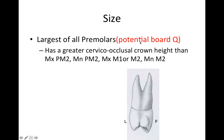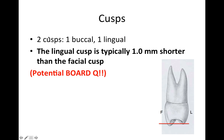In terms of size, the maxillary first premolar is the largest of all the premolars. One way you might see this asked is which tooth has a greater cervical-occlusal crown height — they're not going to make it easy by just asking which has the biggest crown. You'd have a selection of premolars and molars and need to know this one has the largest crown; it is the largest tooth of the premolars.